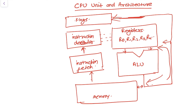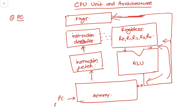Every ALU or embedded system has a program counter, known as the PC. The program counter points to the memory location where the instruction is being executed. The function of the program counter is to point to the address of the next instruction to be executed — if one instruction is executing, the PC will point to the next instruction to be executed.